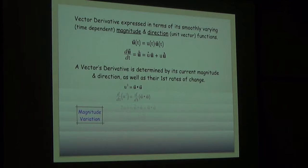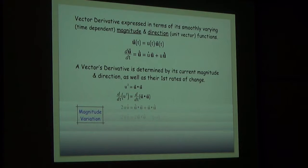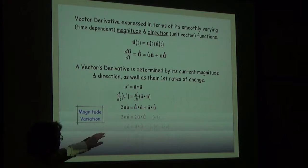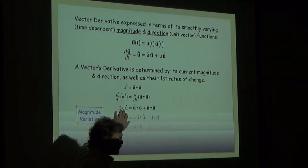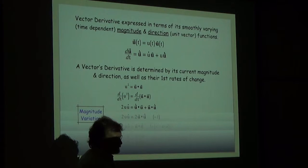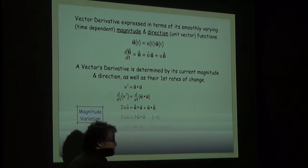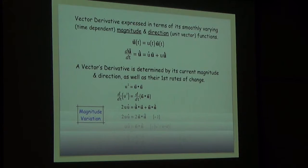The discussion of how magnitude changes starts with a very simple expression: whenever you dot a vector with itself, the result is always the square of the vector's magnitude. Everything here is a smoothly varying function of time. If you take the derivative of this expression, on the left-hand side I'm using the chain rule — taking the derivative of U squared with respect to U times the time rate of change in U. On the right-hand side, I'm using the product rule. Recognizing that those two parts are the same because the dot product is commutative, you're really looking at this.